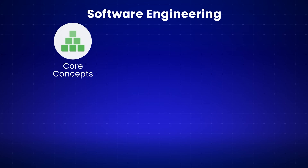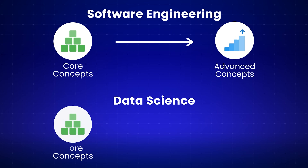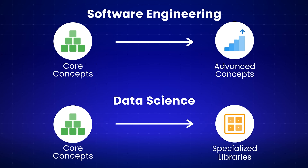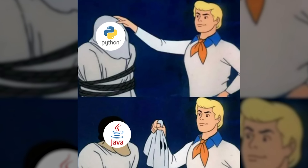So pick your path: core concepts, then advanced concepts if you want software engineering — or core concepts, then NumPy and pandas if you want data science. Write Python code that looks like Python, not Java wearing a Python costume. Do this for a few months and you will know more than people who have spent years stuck in tutorial hell. If you want to know how I actually got hired at top tech companies, watch this video. My name is Sahil and I'll see you in the next one.